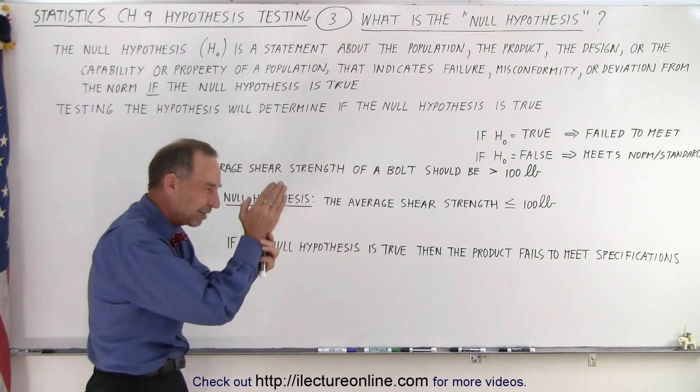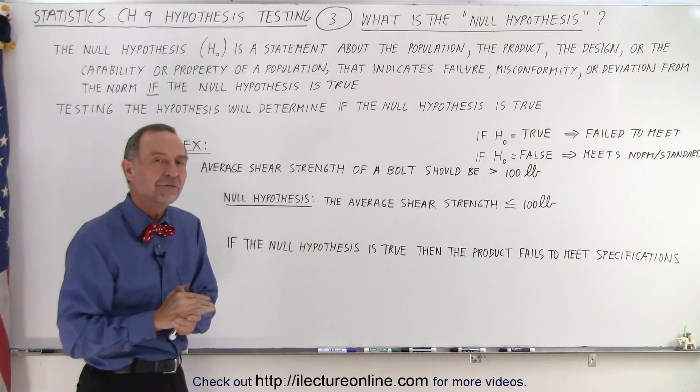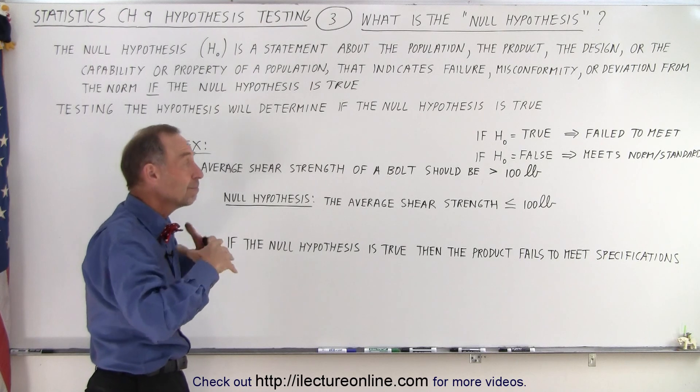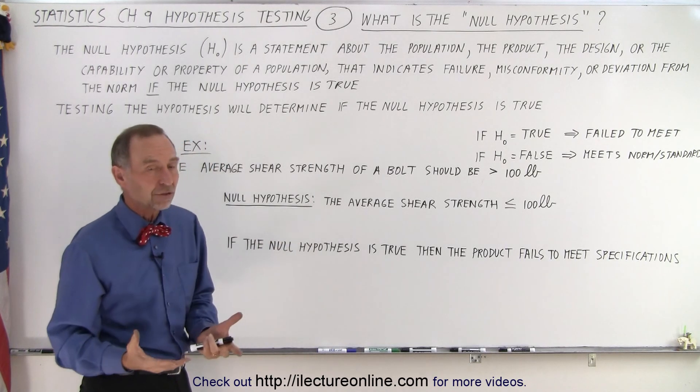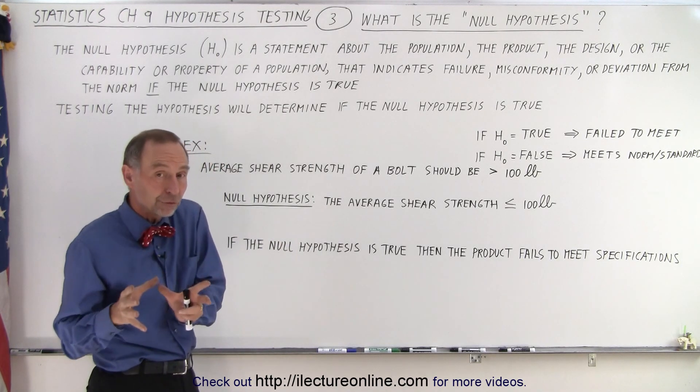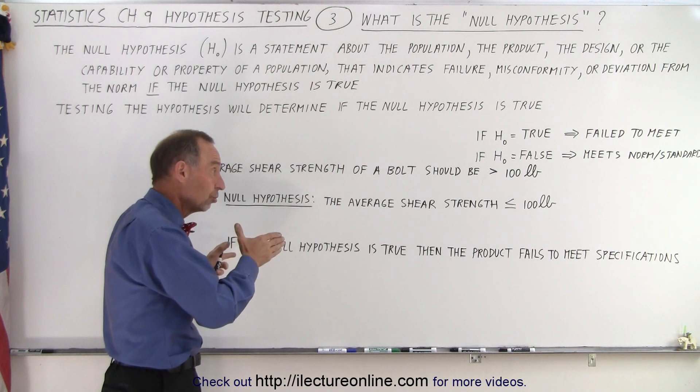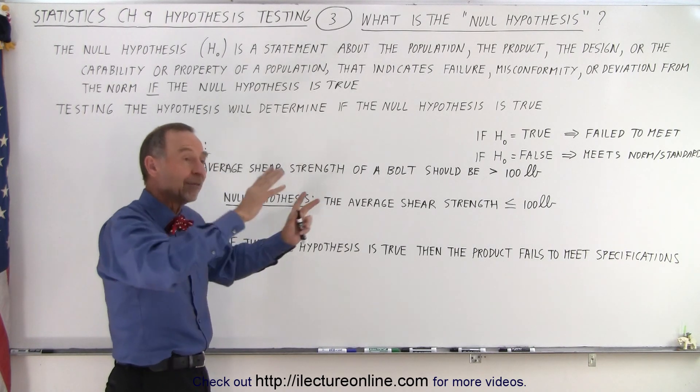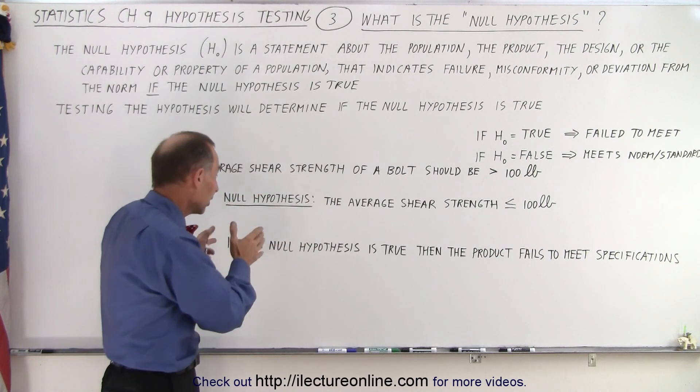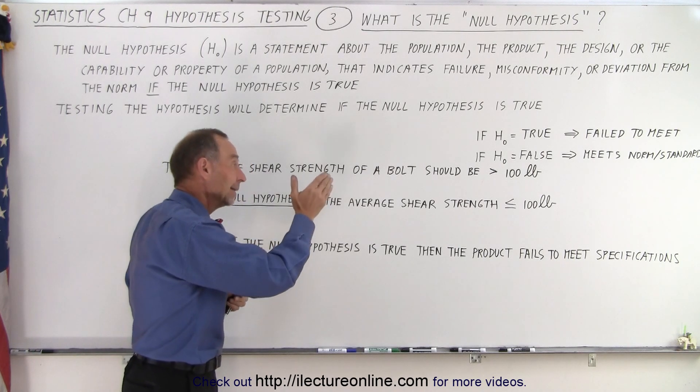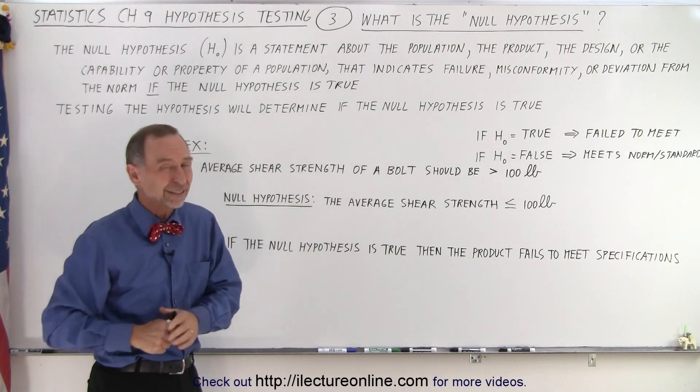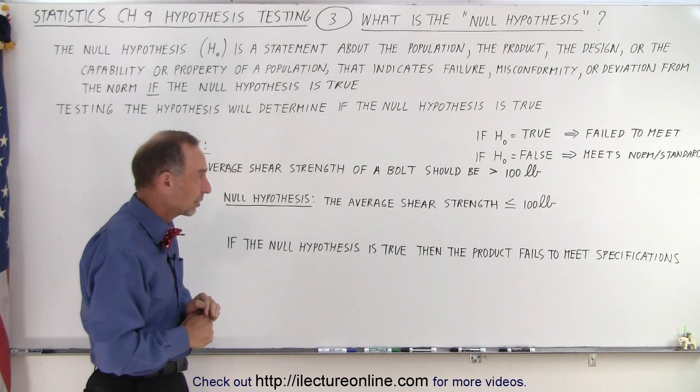So typically the null hypothesis is set at the very limit of the capability where it doesn't meet the specifications or the expectations. And so if we prove that to be false, then everything is good. But if we prove the null hypothesis to be true, then the product doesn't meet expectation and it fails what we expect it to do.